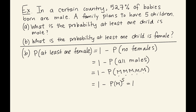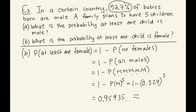In this case, we don't need the complement to find P(male) — it was given in the problem as 0.527. We raise 0.527 to the fifth power, which equals 0.95935... Rounding to three decimal places, there is about a 95.9% chance, or a 0.959 probability, of having at least one female child.